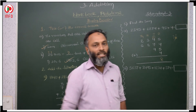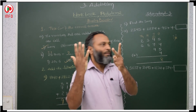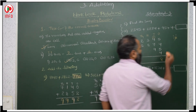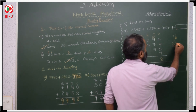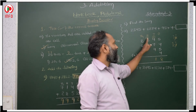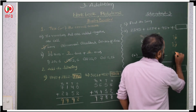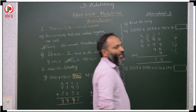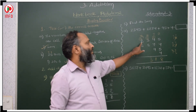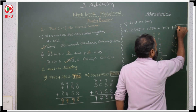10's place: 4 plus 1 carry, plus 7, plus 9 is 21 — 1 in 10's, carry 2 to 100's. 100's place: 8 plus 8 plus 2 carry is 13 — 3 in 100's, carry 1 to 1000's. 1000's: 6 plus 2 plus 1 carry is 9. Total: 9,318.